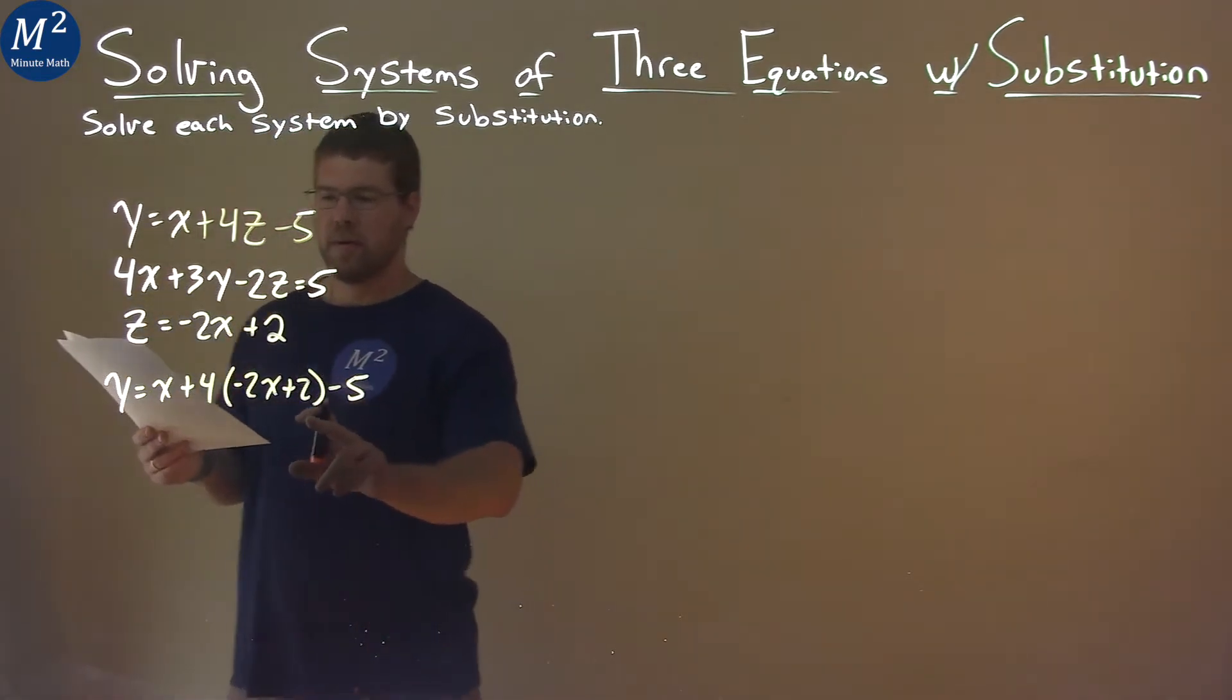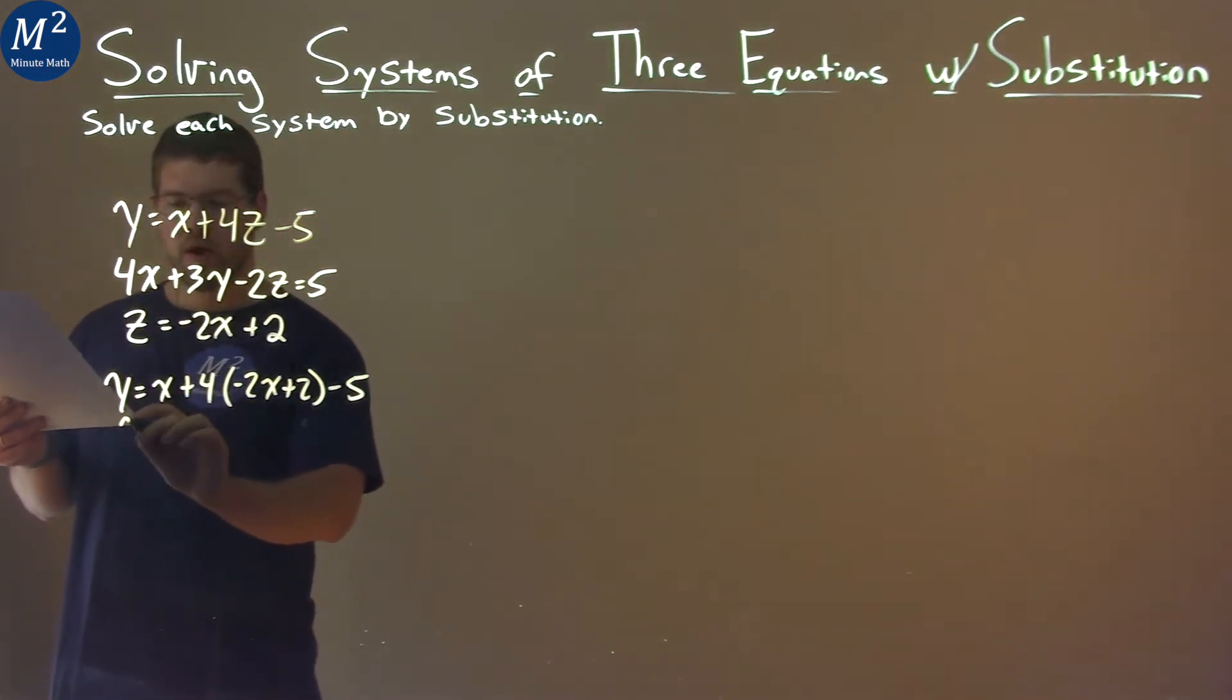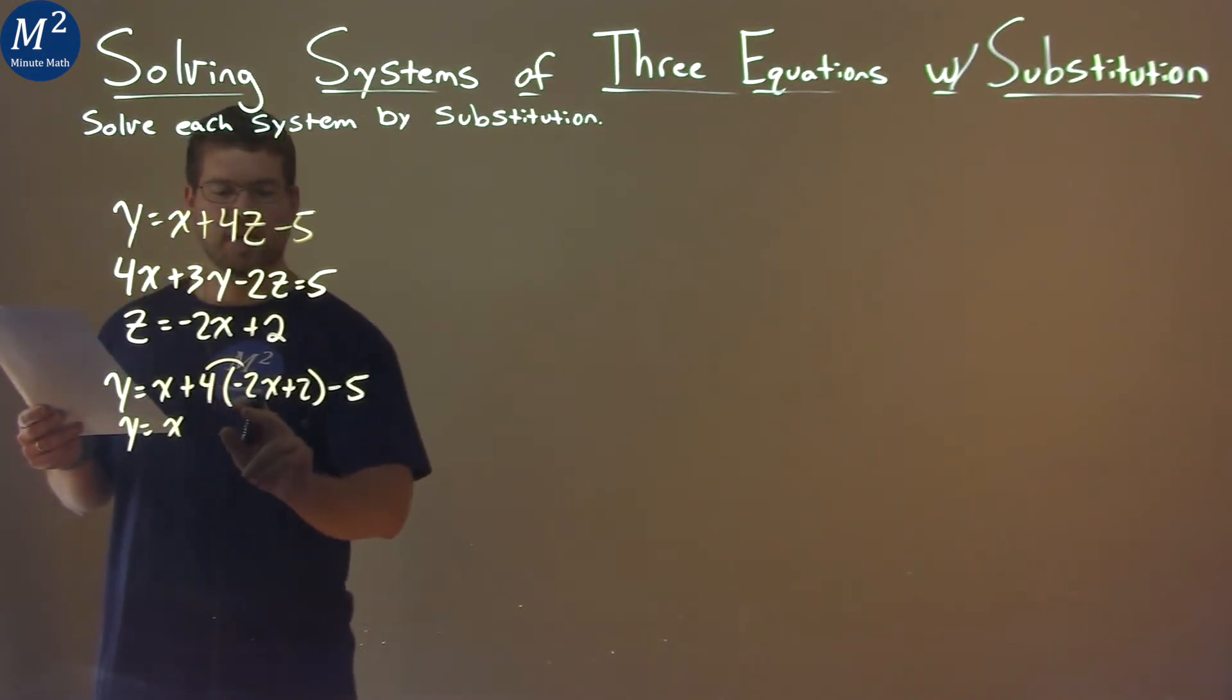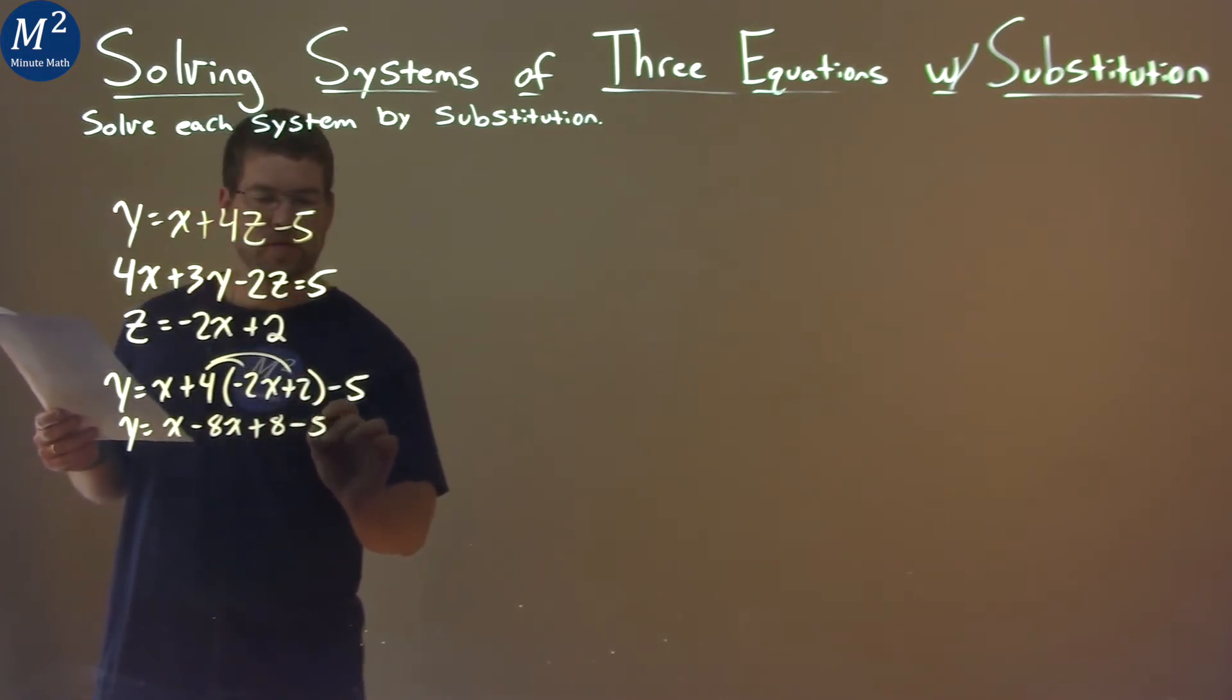Then from there, I want to simplify to get y by itself. So y equals, we have the x here, but we distribute the 4. 4 times -2x is -8x, and 4 times 2 is 8, then we have a minus 5 here.